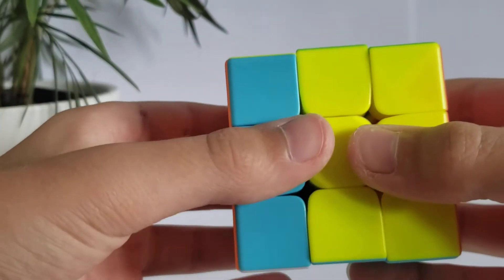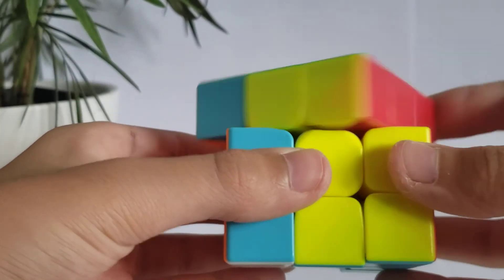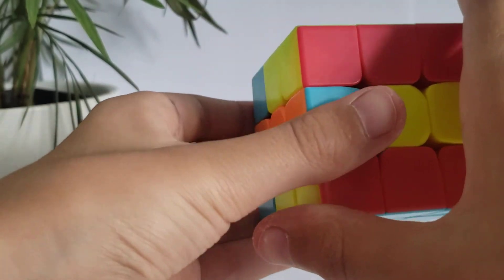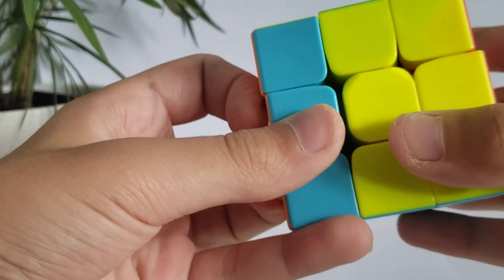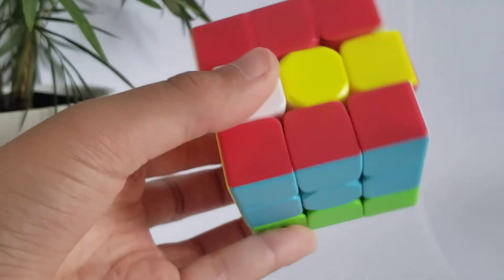But yeah, all you have to do is just turn it to the color that you want, and then turn the top one across and the bottom across, and that's the Spanish flag.